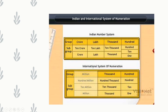Whereas in the International system of numeration, we have: Units period (ones, tens, hundreds), Thousands period (thousands, ten thousands, hundred thousands), and Millions period (millions, ten millions, hundred millions). Each and every period in the International system has three place values. This is different from the Indian system where only the units period has three place values and all remaining periods have two place values.